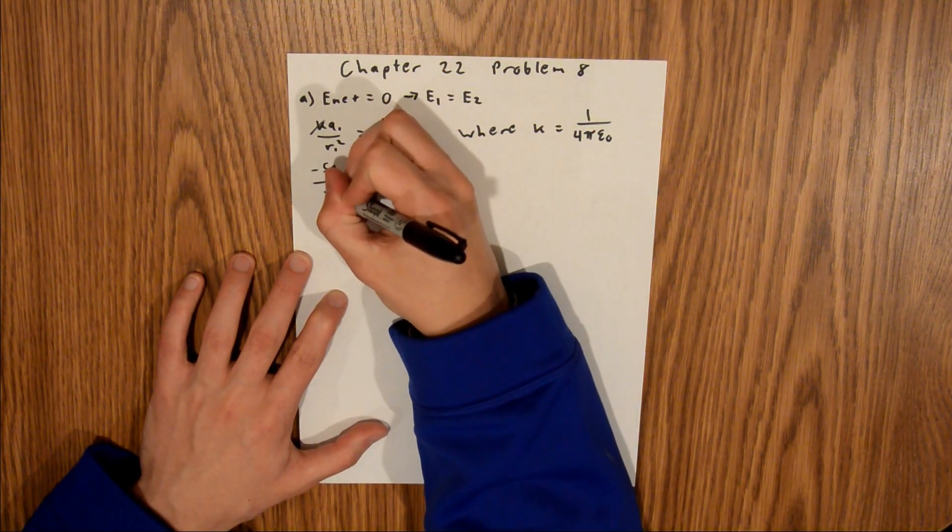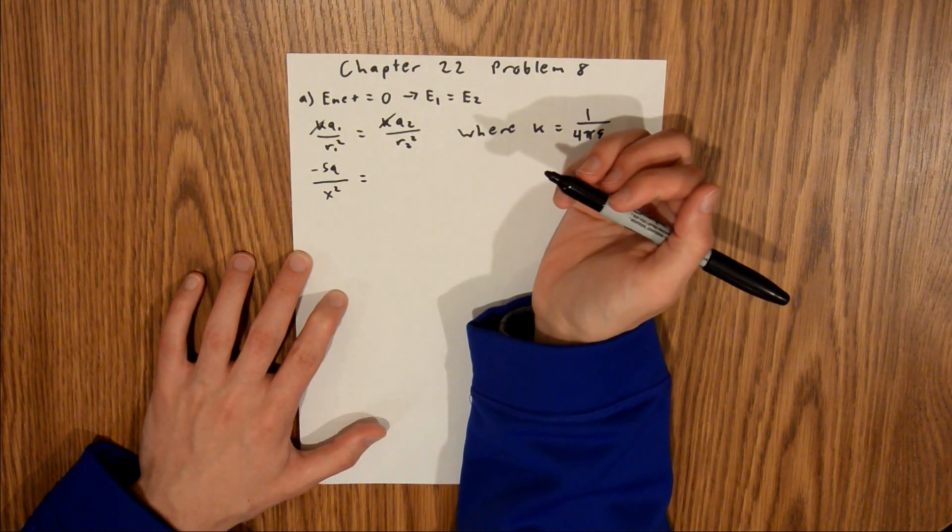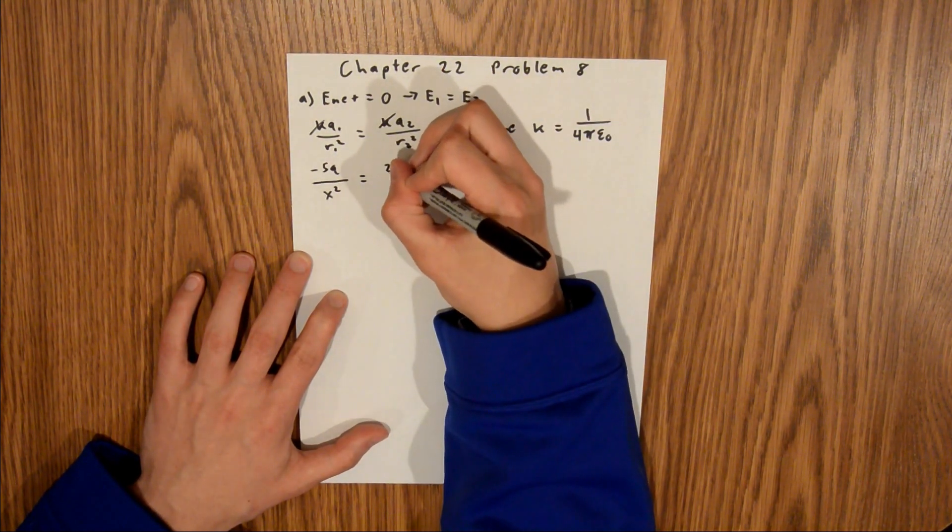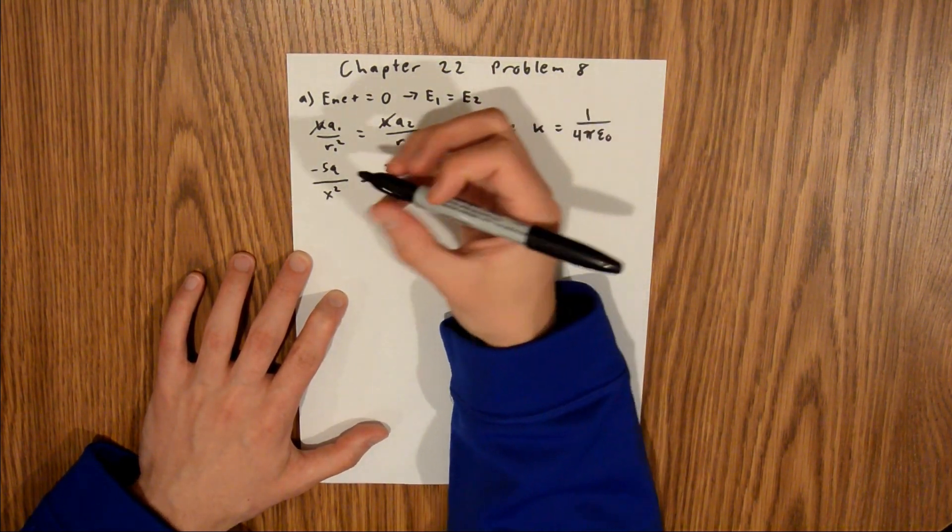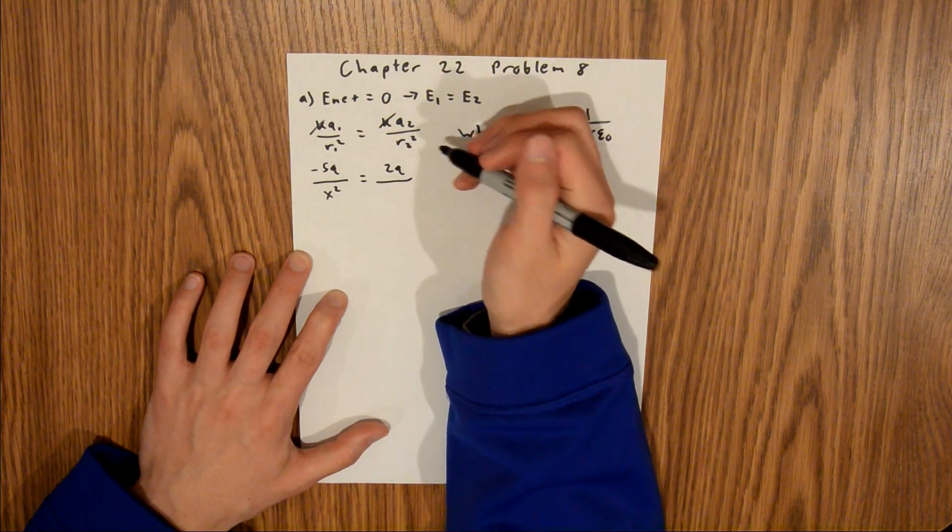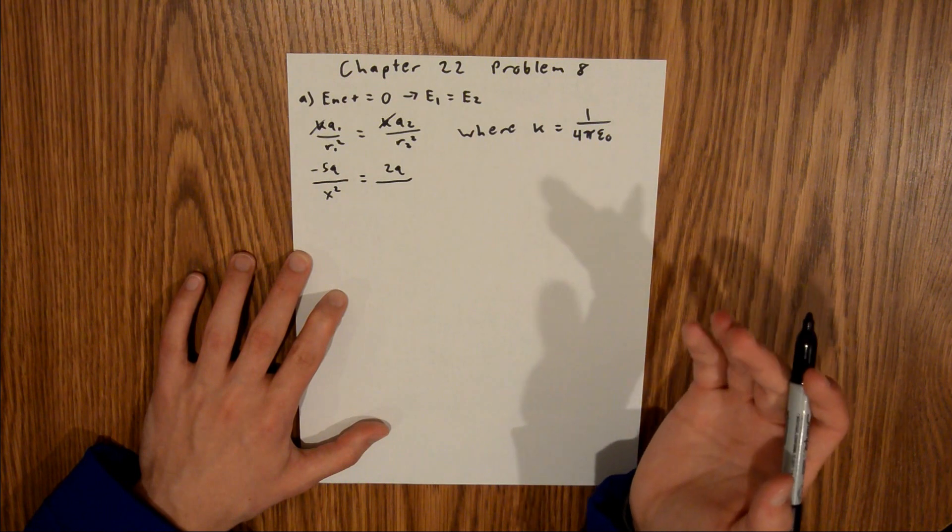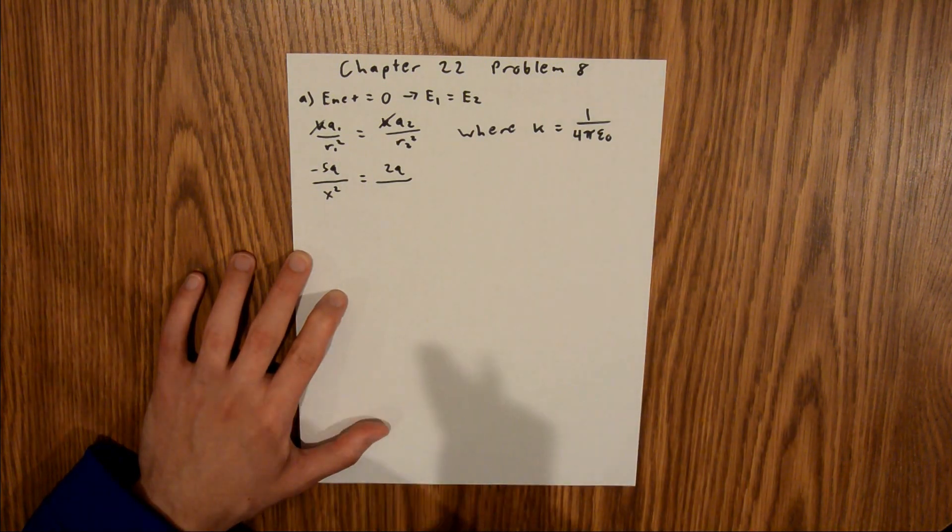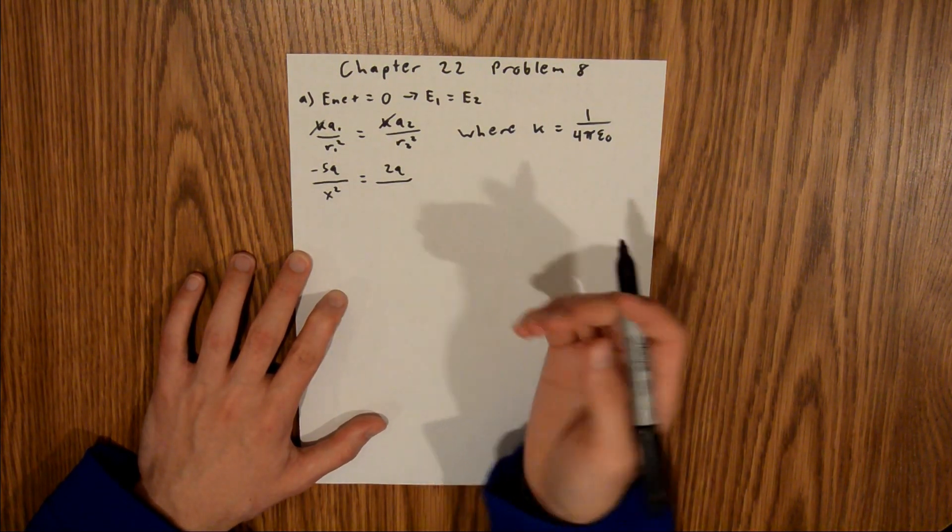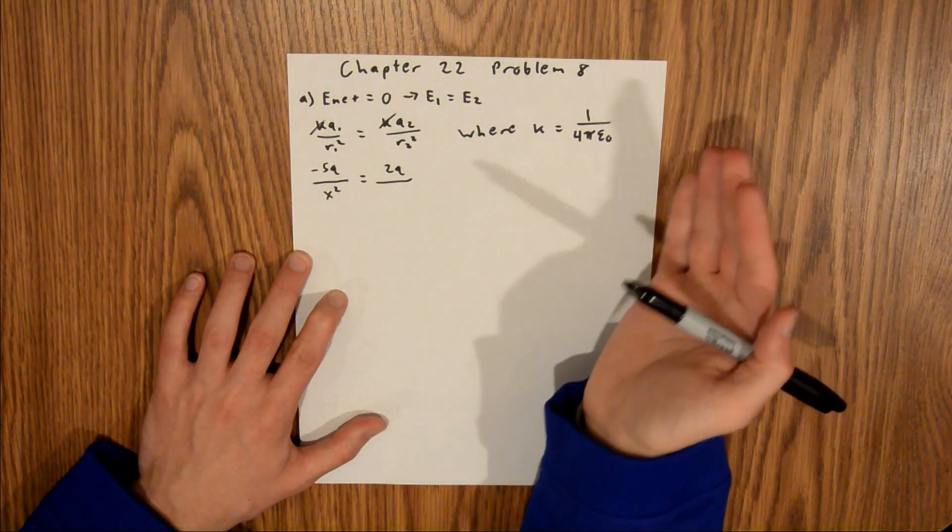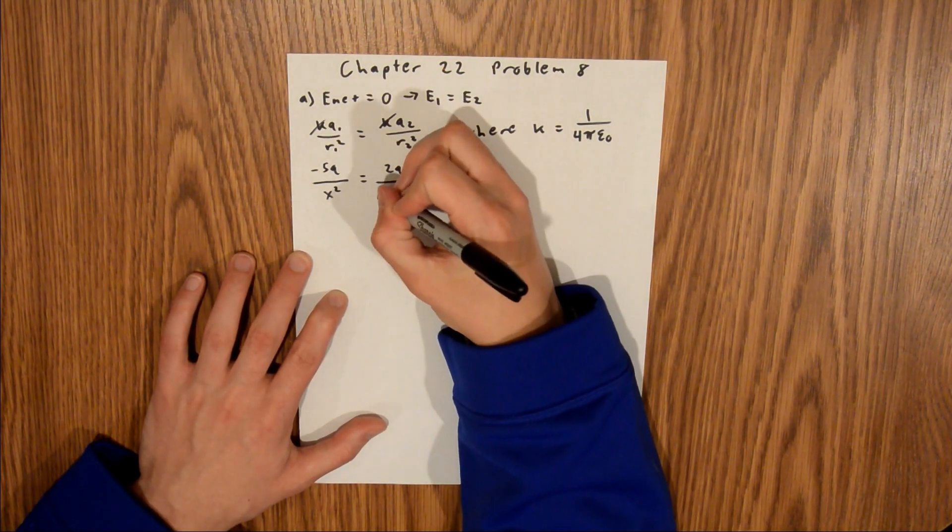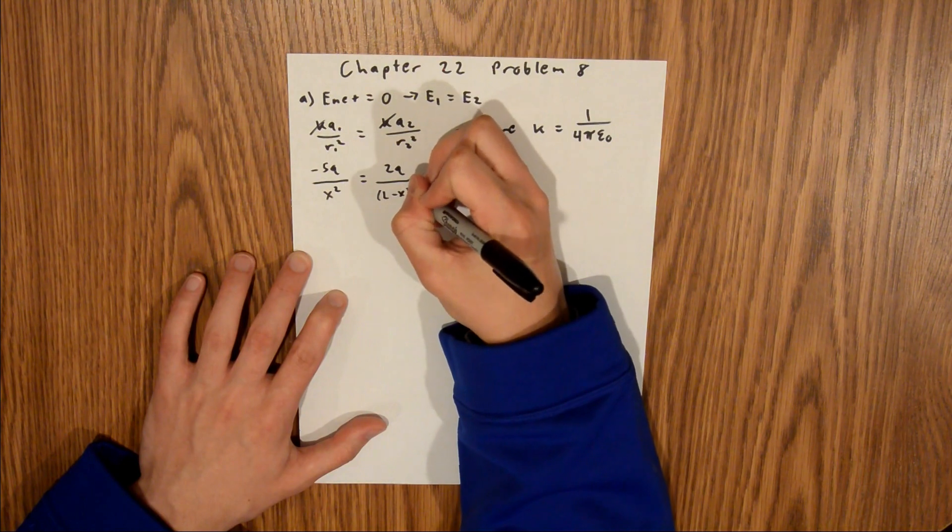So this is x squared, and so then this is equal to charge 2, which is 2q, divided by our second distance, which, in the figure that we're given, the distance between the two particles is l, and I just defined the distance from charge 1 to our point where e is zero as x, and so that means that this distance is l minus x. So this is l minus x squared.